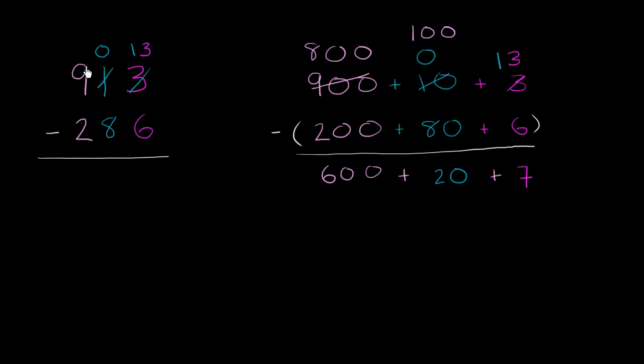Well, we could take 100 from the 100's place. So 900 becomes 800. And give that 100 to the 10's place. So you give the 100 to the 10's place. 100 plus 0 10's is 100. 100 is the same thing as 10 10's. Is the same thing as 10 10's. And so now we are ready to subtract.